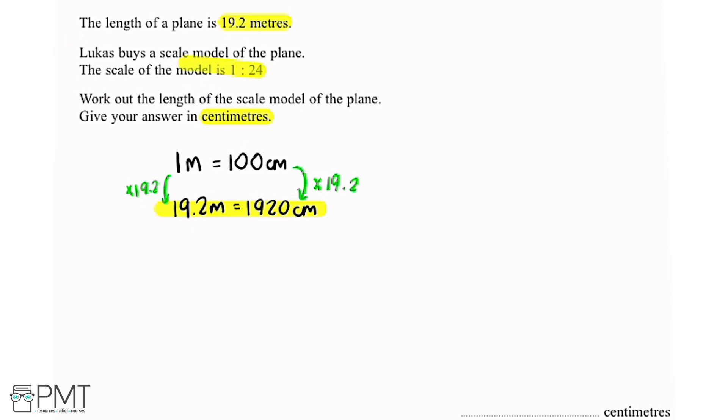Now if we look at this line, the scale model is 1 to 24, so the length of the scale model is 24 times less than the actual length of the plane.